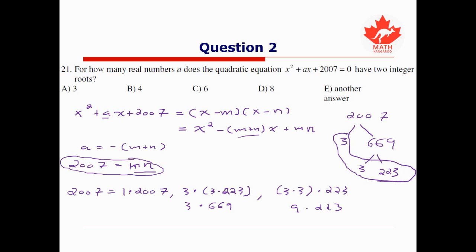But notice as well, for any one of these factorizations, if both terms were made negative, the negatives would cancel out and we would still multiply together to get a positive. So for each one of these pairs, what values of a do we get out?